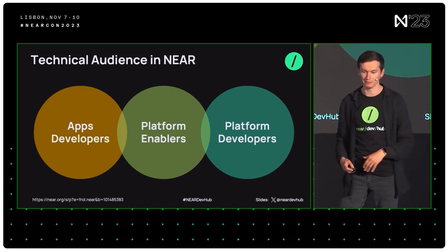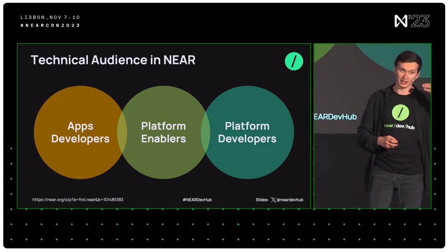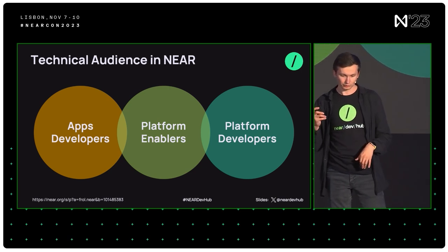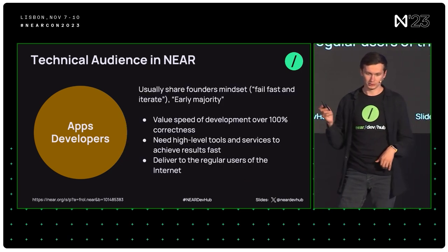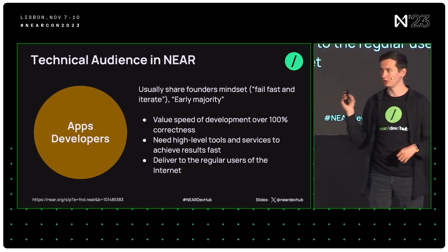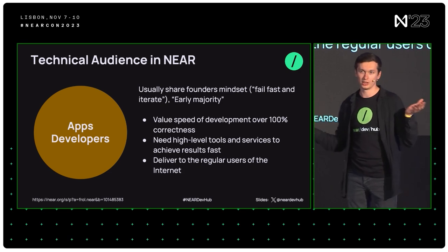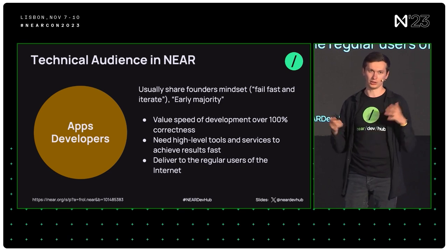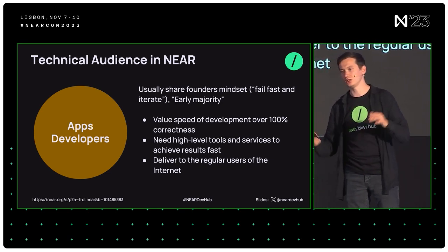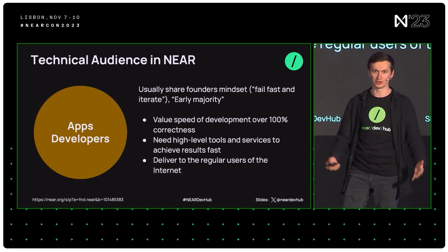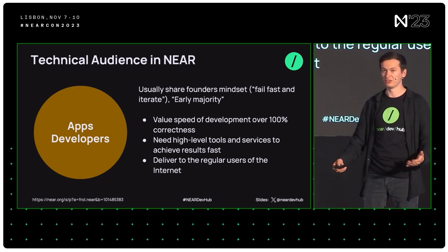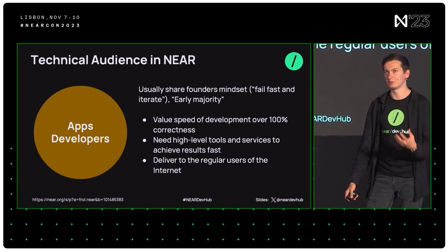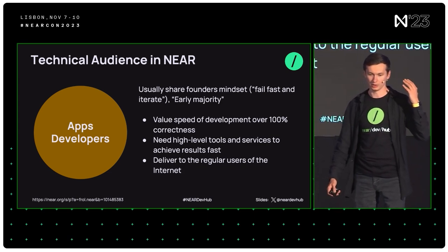I want to walk you through at least a little bit of this area so we're all on the same page — because even some developers don't really realize how different some groups of developers are. Starting from here with app developers on the left in my diagram: these are developers who are the majority, I believe, in developer space. They build business apps for regular users of the internet. They value speed of development over correctness in a certain sense, because they need to ship fast and please their users.